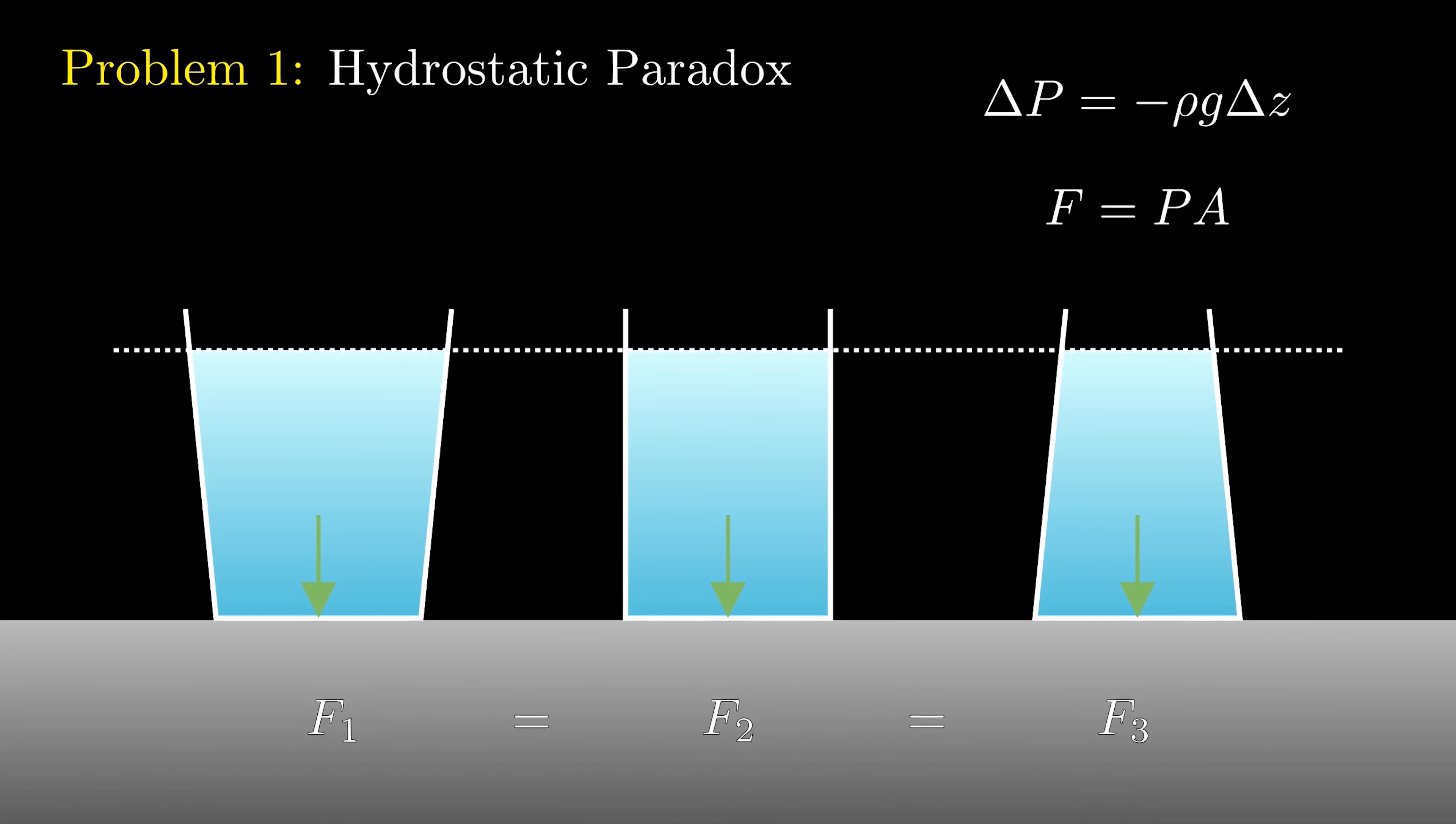But how can this be? The volume of water is much greater in the first compared to the second, and the second compared to the third. If the volumes are different, how can the forces at the bottom be the same? If we find a resolution to this paradox, comment it down below.